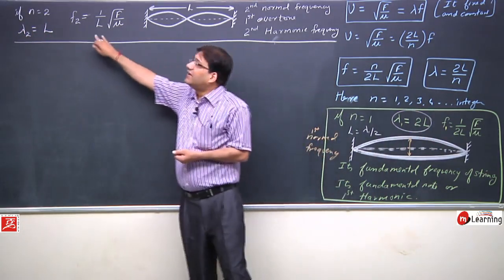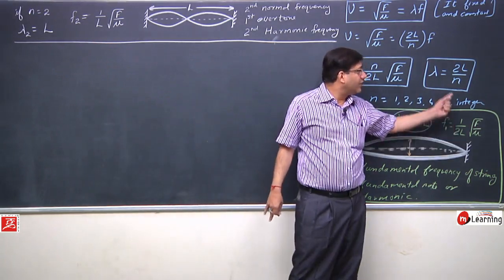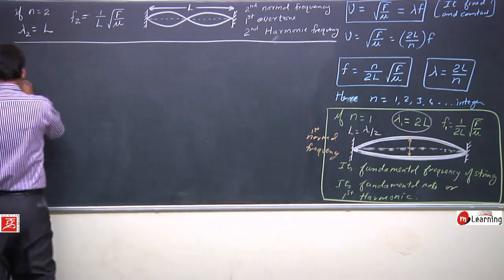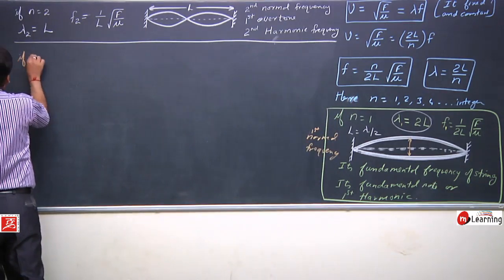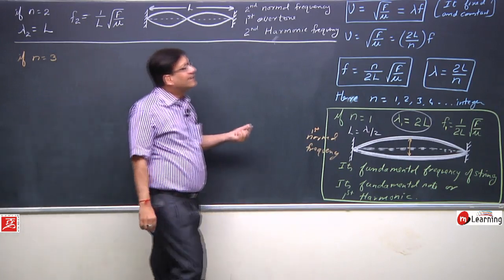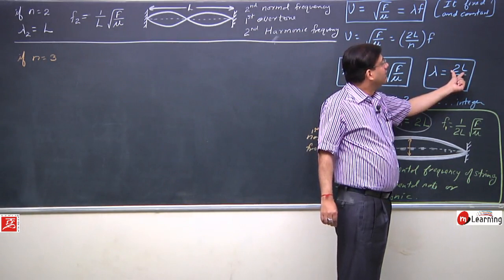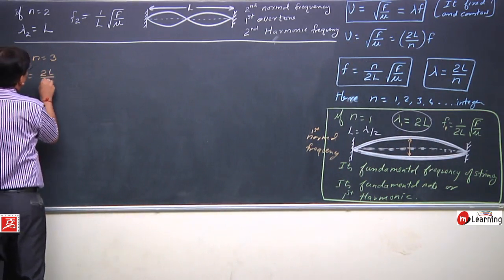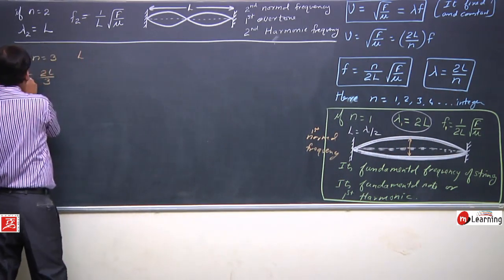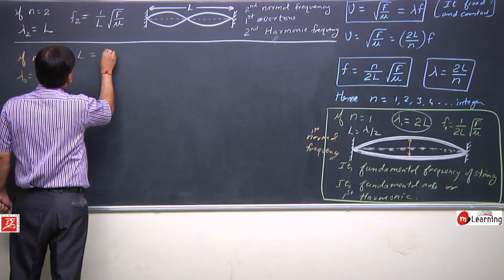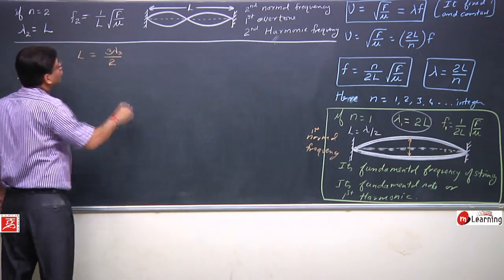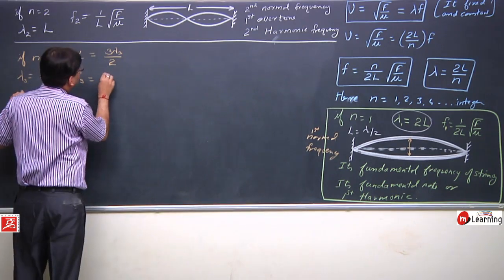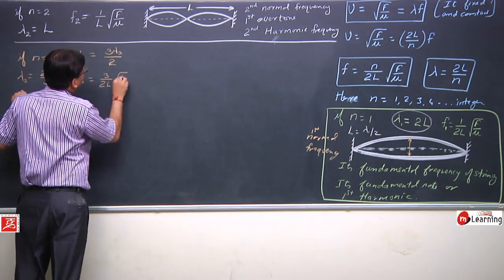For n = 3, the wavelength λ3 = 2L/3. The length of string L = 3λ3/2. The frequency f3 = 3/(2L) × √(F/μ). This is the third case, and the string shows three loops.